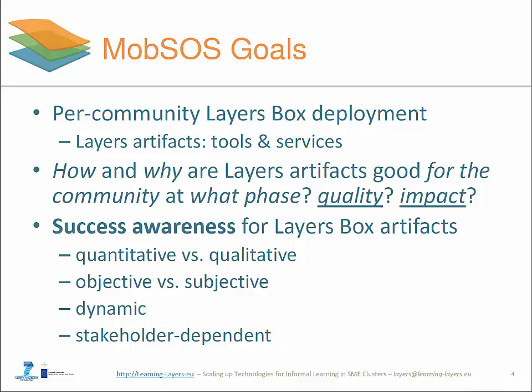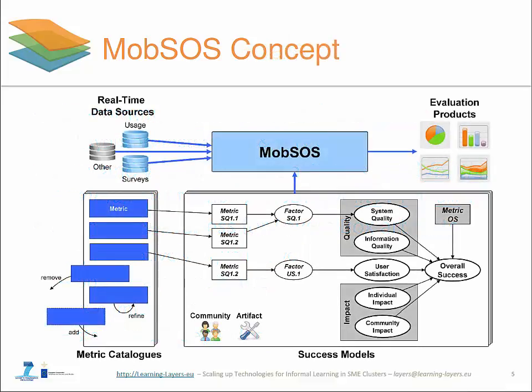So how does Mobsource help communities to achieve continuous artifact success awareness? The basis for creating artifact success awareness is data. Mobsource relies upon two main data sources: usage data and survey data. Other data like user-generated content might also come in handy. Usage data allows us to observe agent interaction — for example, the interaction of users with artifacts — from which we can derive objective metrics such as service response times, failure rates and others.